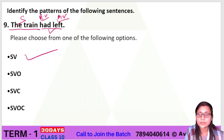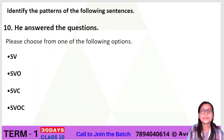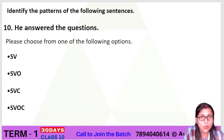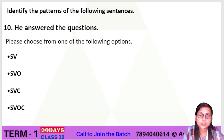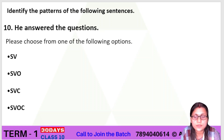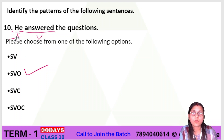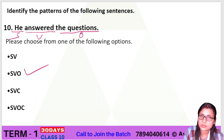The last question: 'He answered the question.' What is the correct alternative — SV, SVO, SVC, or SVOC? Yes, all of you have given the right answer. The right answer is SVO. 'He' is the subject, 'answered' is the verb, and 'the question' is the object. When we ask 'He answered what?', the answer is the object. So SVO is the right answer. Thank you so much and we will meet in our next class next week.